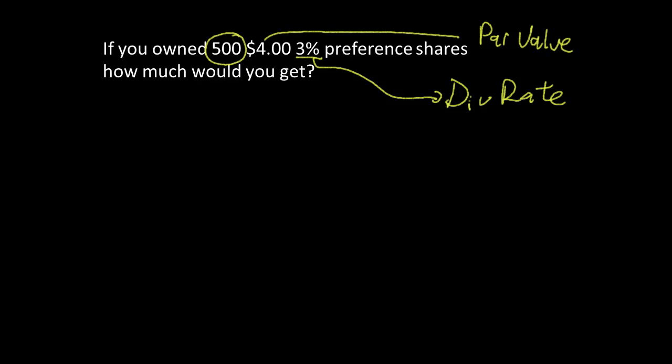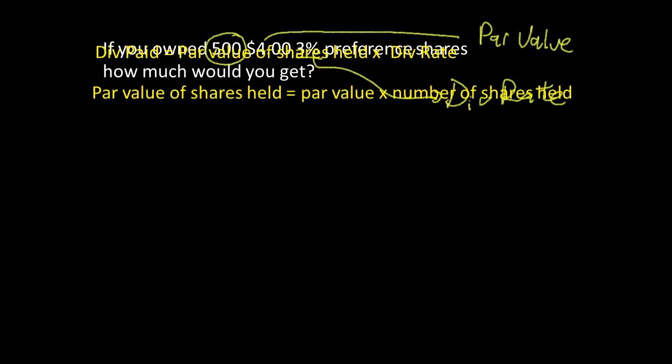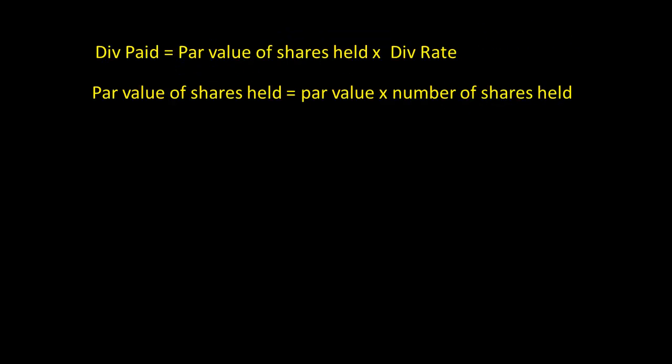Let's look at how it works, the formulas. The two formulas we get are: div paid equals par value of the shares held times the div rate. That's what you're getting in your pocket. This is how you find out the par value of the shares held: par value times the number of shares held. Remember, our par value was four dollars from that question before.